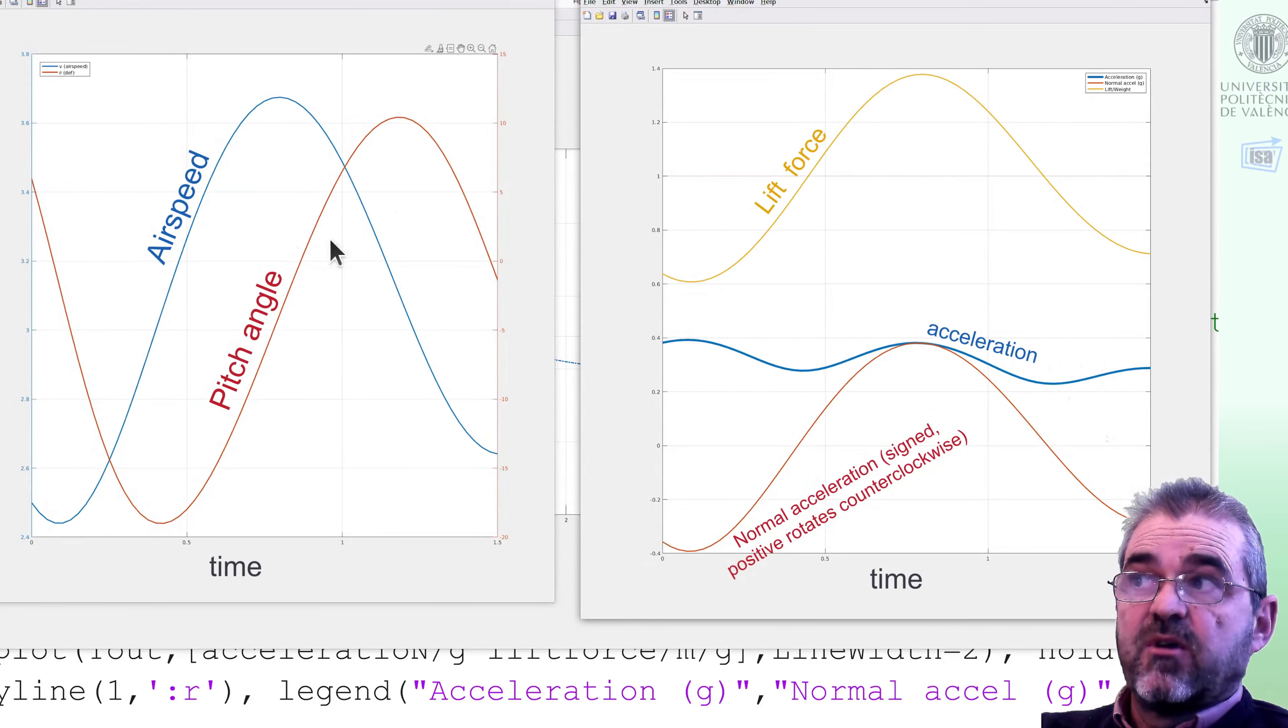And we end up having plots like this. In the left one, we have, in blue, the airspeed. In red, the pitch angle. And in the right-hand side, we have, in blue, the total acceleration. In red, the normal acceleration, depending on the sign. It will mean that the path rotates in clockwise or counterclockwise direction. And we have, in yellow, the wing provided lift to check if the wing breaks or not.